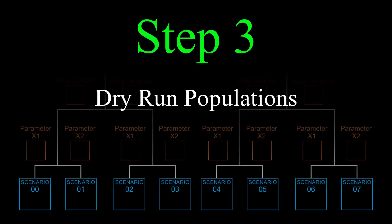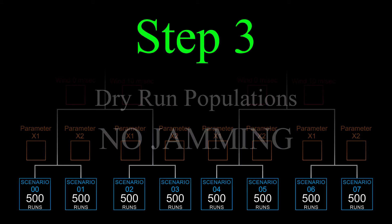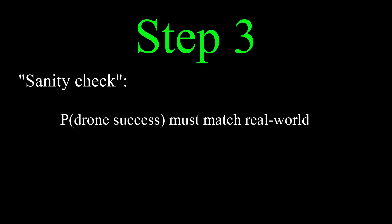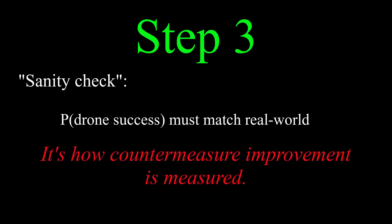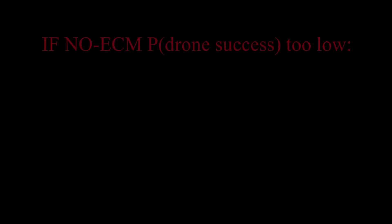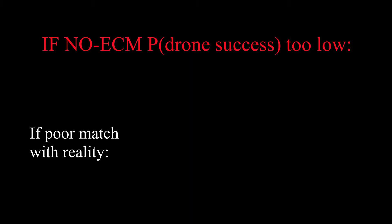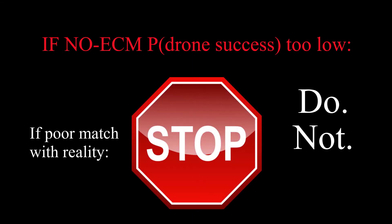Okay, step three, dry run population. We have to generate eight populations of, let's say, 500 runs, in which there is no jamming. This step is a sanity check to demonstrate the probability of a successful drone attack. If the drones can't hit the ship when the jamming is absent or hit it often enough, something needs to be fixed before proceeding.